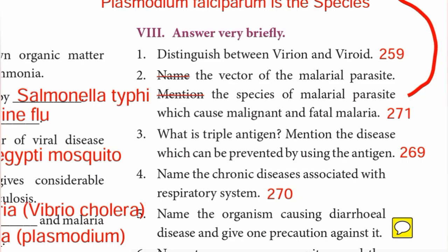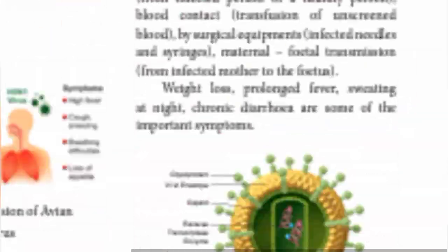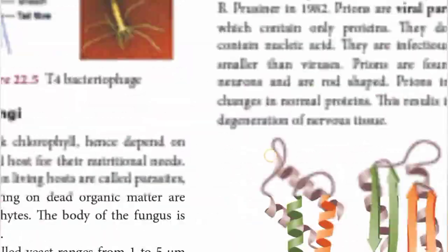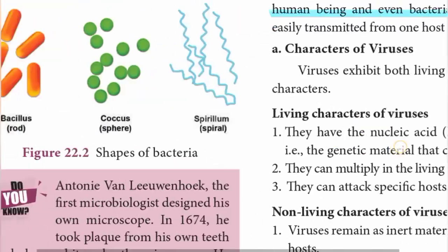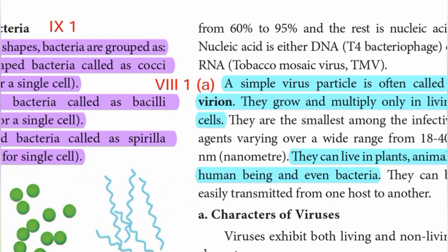Roman number eight: Answer very briefly. First — distinguish between virion and viroid. Virion: a simple virus particle; they grow and multiply only in living cells and can live in plants, animals, human beings, and even bacteria.